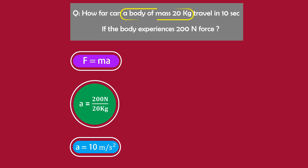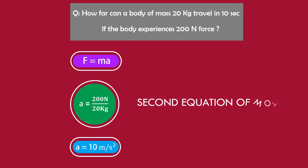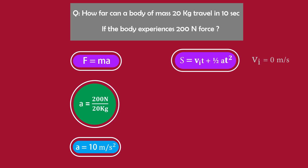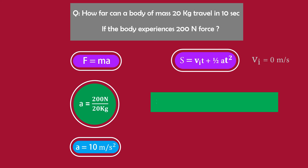But in the question we are asked about the distance the body will travel if this body of 20 kg experiences 200 newton force. We know that the second equation of motion can solve our problem: s is equal to vi·t plus one half a·t squared. Consider that initially the body is at rest, hence its initial velocity is 0 meter per second. Thus we put the remaining values: s is equal to 0 times 10 seconds plus one half times 10 meter per second square times 10 seconds squared.